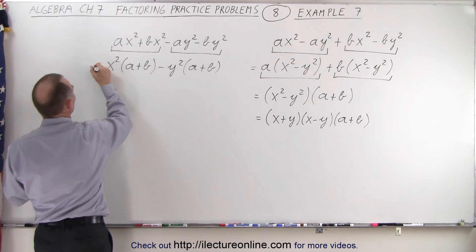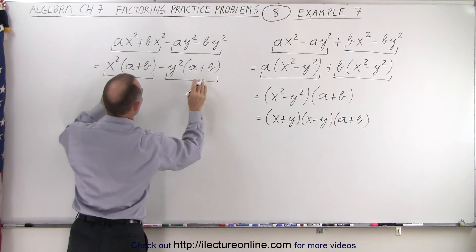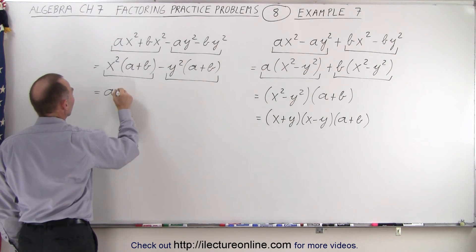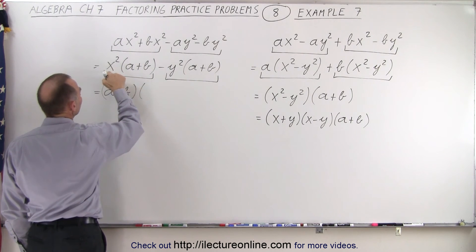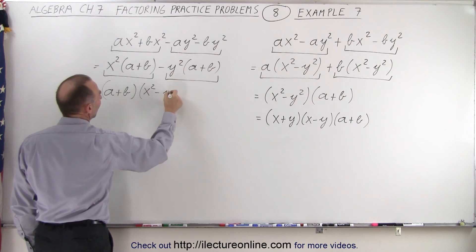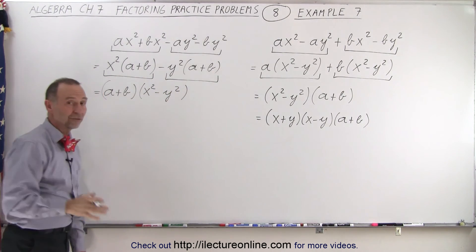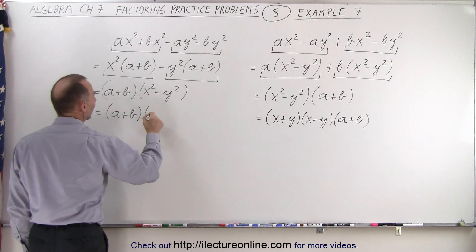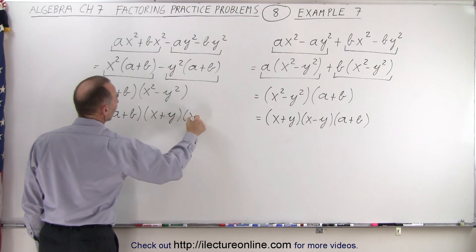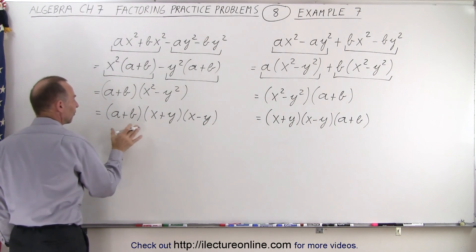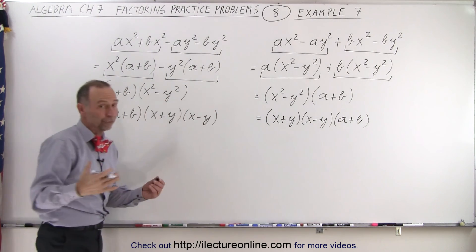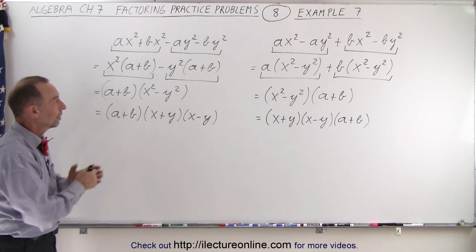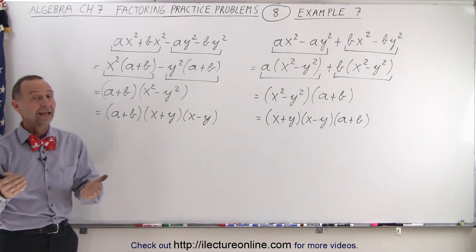Now notice that we have two terms, and they both contain the factor A plus B. I can factor that out. So this is equal to A plus B times x squared minus y squared. Then I realize that this is the difference of squares, so I can factor it further: A plus B times x plus y times x minus y. Notice this is the very same result as before — just in different order, but that doesn't matter. So you can see that it didn't matter which terms we grouped together; we end up with the exact same result. And that is how it's done.